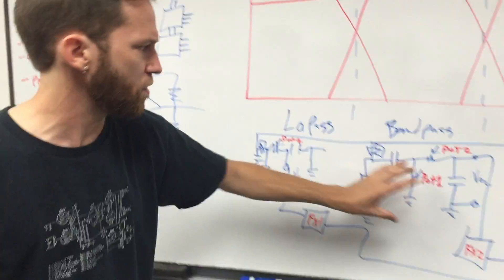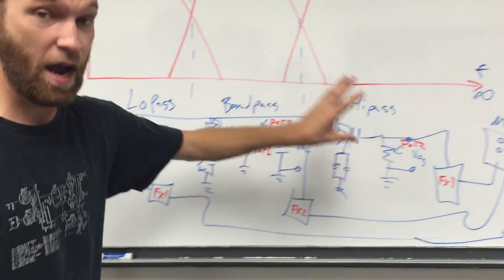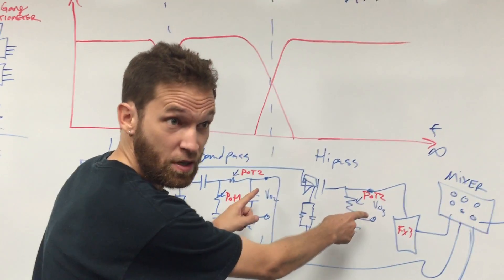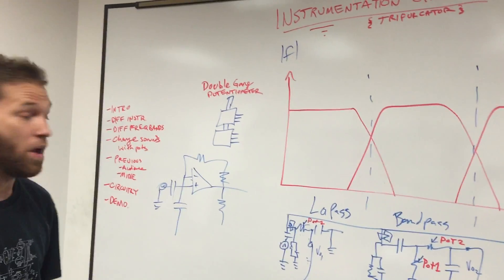Here are the filters. We have a low pass, a band pass, and a high pass, and one potentiometer is controlling two filters at a time. It's called a double gang potentiometer.